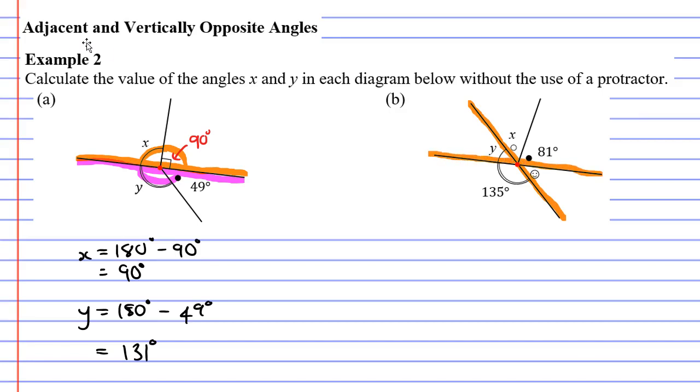We learned earlier that if you have two straight lines that intersect at a point, then you will have what are called vertically opposite angles. Meaning that the angle of 135 degrees must be the same as the angle opposite that. So angle X plus the 81 degree angle must equal 135 degrees.